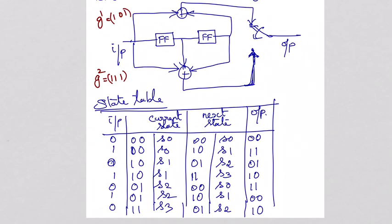Since the encoder has two flip-flops, there will be four states: 00, 01, 10, 11. For every state we have to apply both inputs. Output is required for each combination.